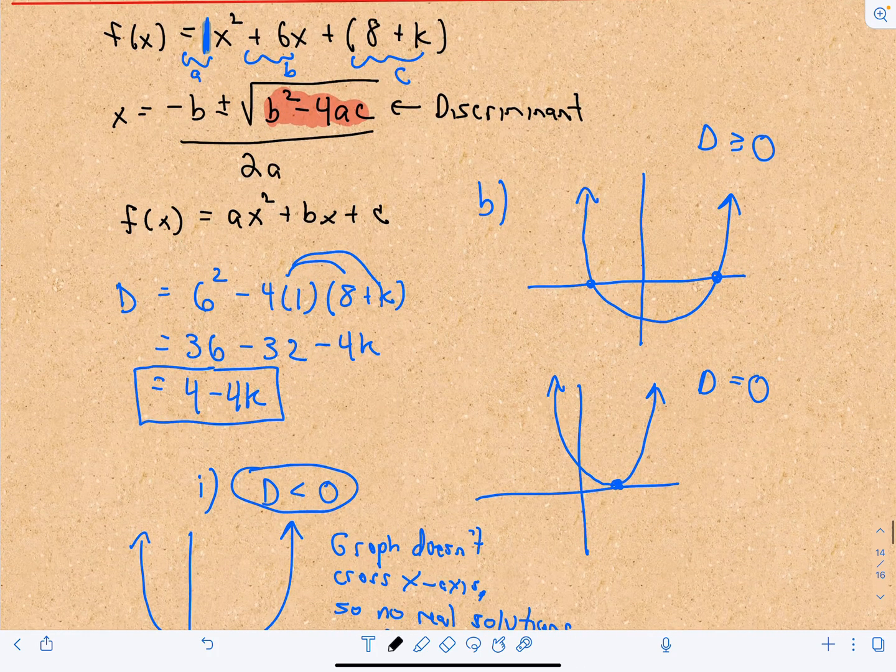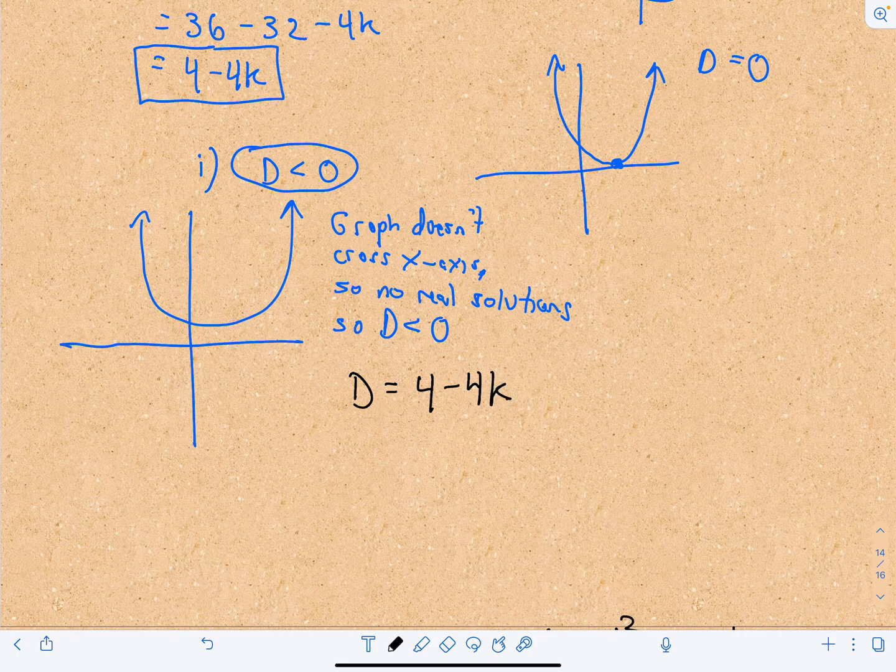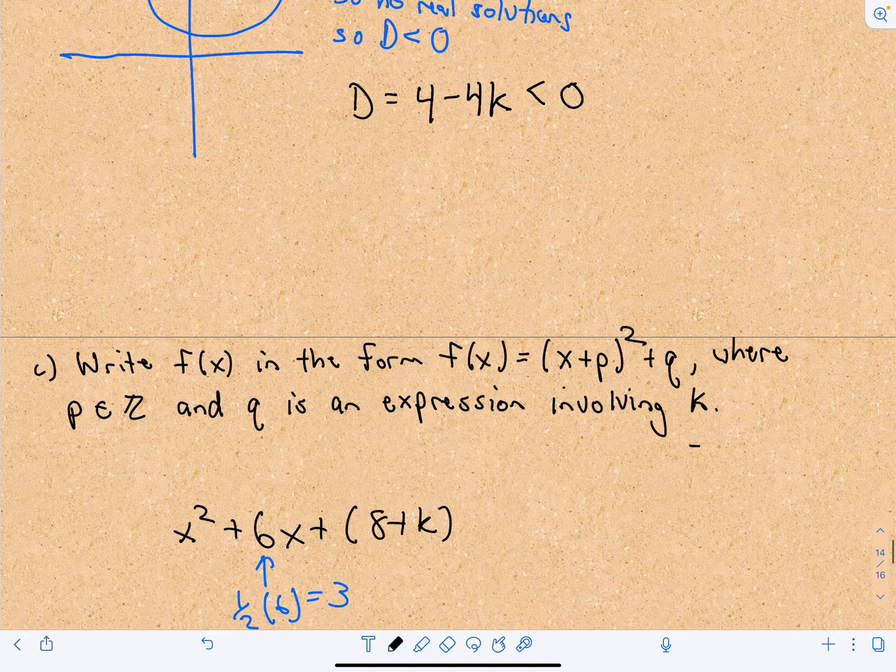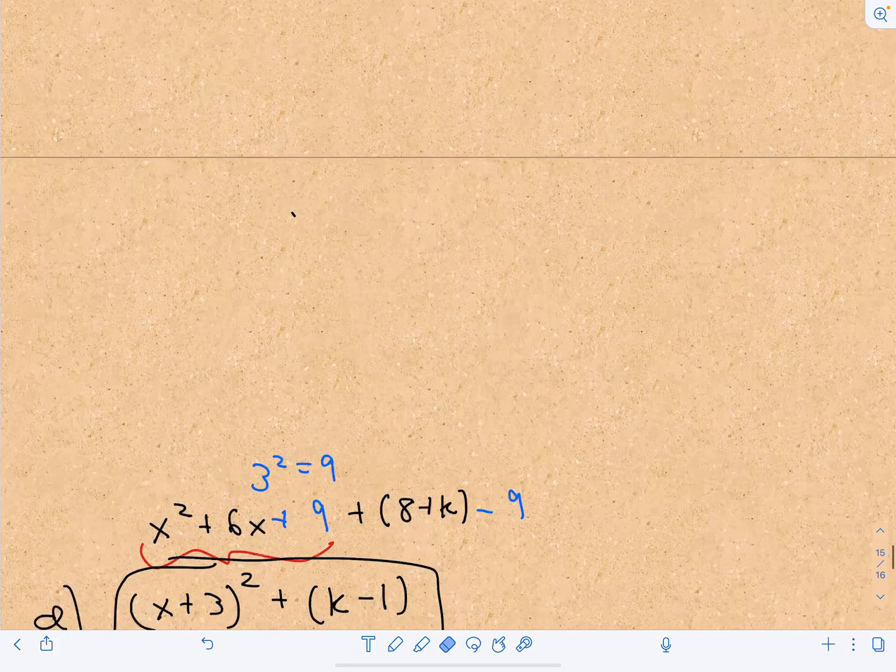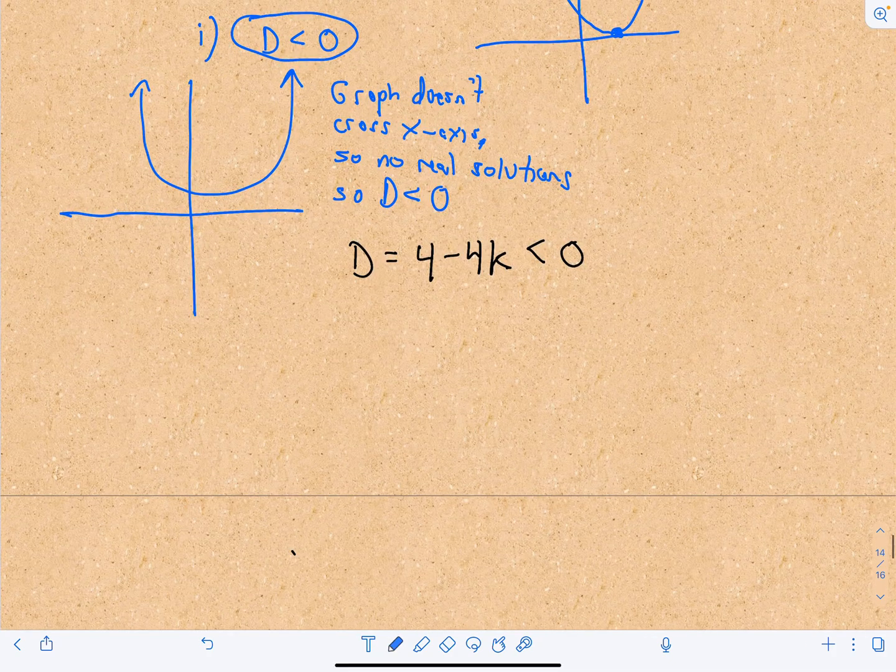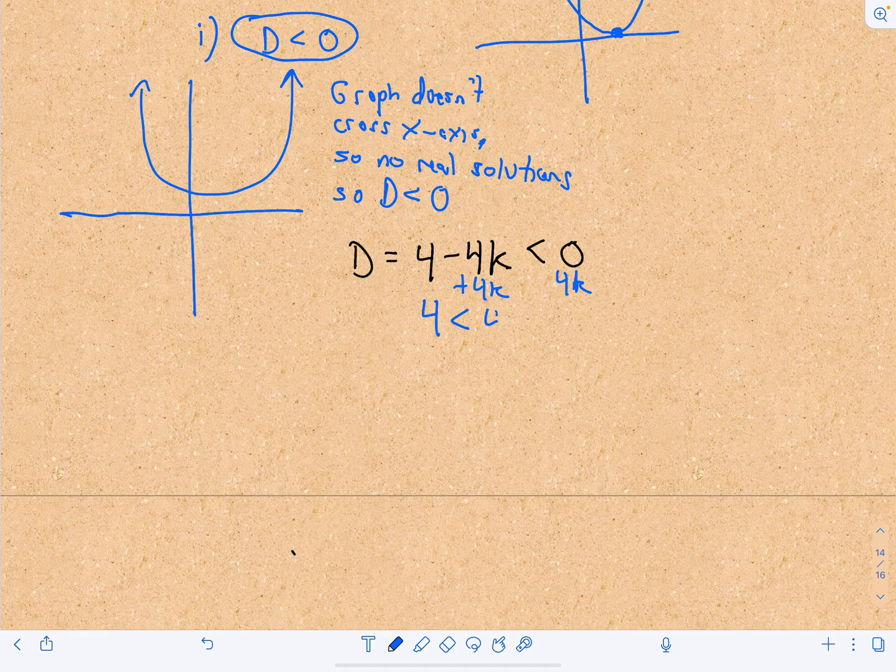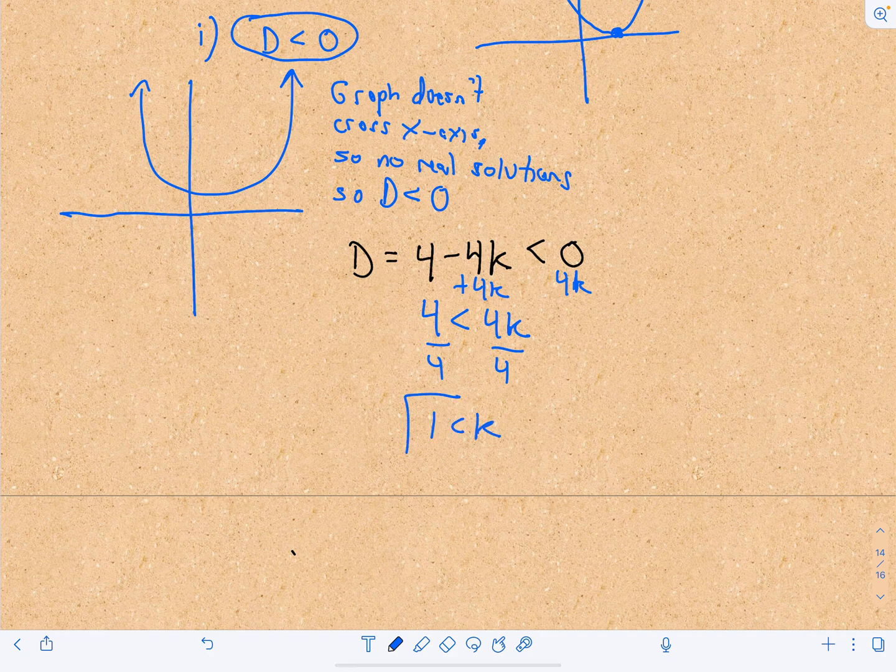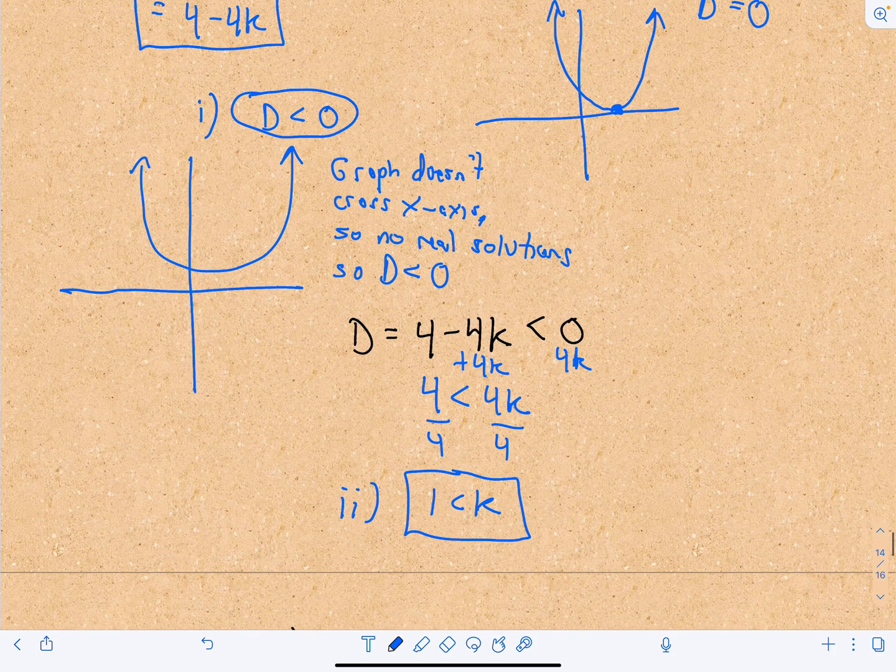So that means our discriminant equaled 4 minus 4k, and we said that has to be less than 0, so now we just have to solve this inequality. So now we have to solve this inequality. Well, we'll just add 4k to both sides. So if we add 4k to both sides, we'll just have that 4 is less than 4k. And if we divide both sides by 4, well, that says that k is going to be greater than 1. So that's going to be our restriction on k. The discriminant has to be less than 0, and correspondingly, we're going to get that k is greater than 1.